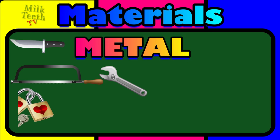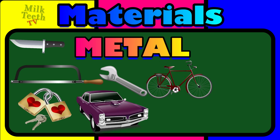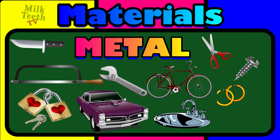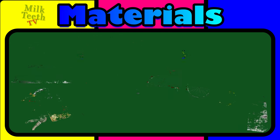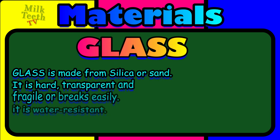Lock and keys, your car, your bicycle, even the kitchen sink, scissors, a small screw, your mama's gold bangles and other jewelry, and kitchen tools like a grater — all are made with metals. So basically, things that are strong, durable, and water resistant are usually made up of metals.